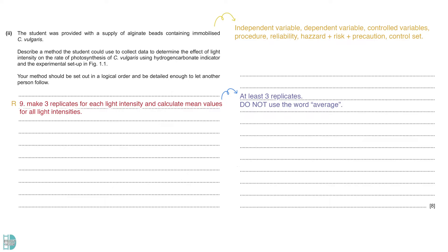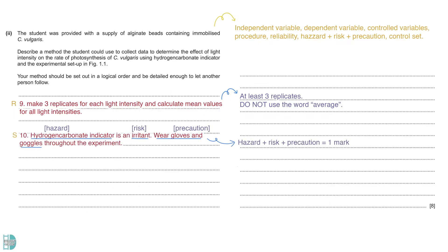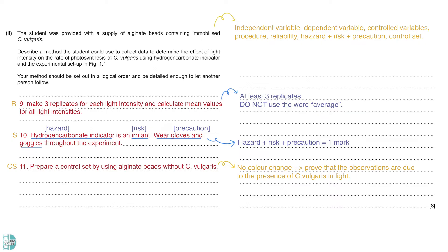You should always make at least 3 replicates. Do not use the word average instead of mean, as it is not the right mathematical term. When writing about the safety and precautions, you must identify the hazard, state the risks, and describe the precautions taken. Hydrogen carbonate indicator is an irritant; the experimenter should wear gloves and goggles throughout the experiment. We can prepare a control set by using alginate beads without C. vulgaris. The lack of colour change will prove that our observations are due to the presence of C. vulgaris in light.